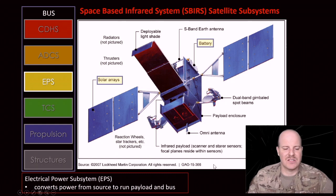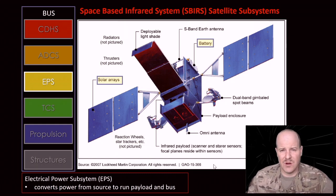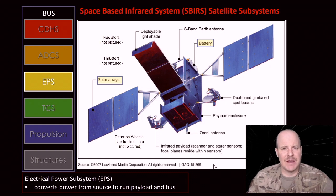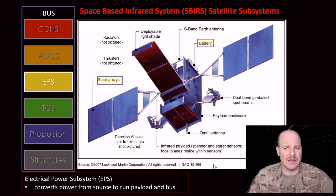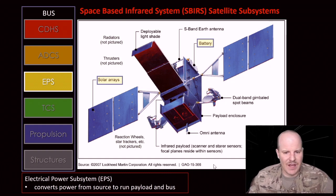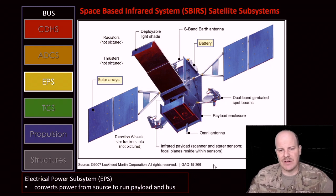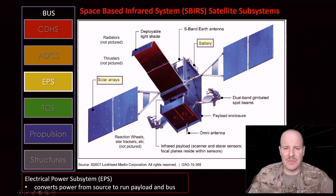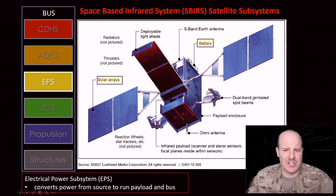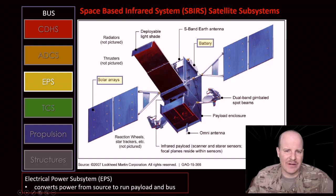Next is the EPS — that's the solar arrays and batteries for the system. Most of the satellites we're going to be talking about have solar arrays because they're orbiting the earth, so we've got a lot of plentiful solar power out there. It's going to use solar arrays to generate that power, and then it has to store that power somehow when the spacecraft goes into the earth's shadow or eclipse, so it uses a battery to do that.